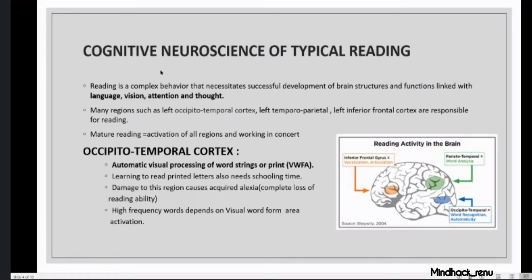Reading is actually a very complex behavior. It needs coordination of language, vision, attention, and thought. When reading is matured — meaning when all these regions are activated and work in sync, working in concert — then we can say that the reader is able to read fluently.